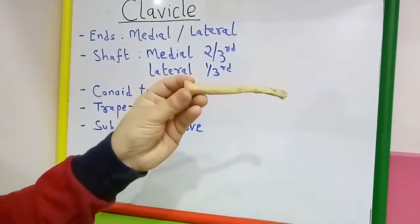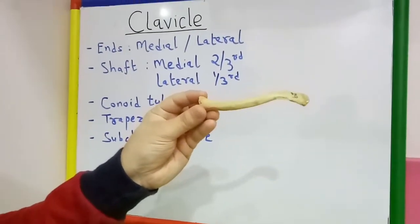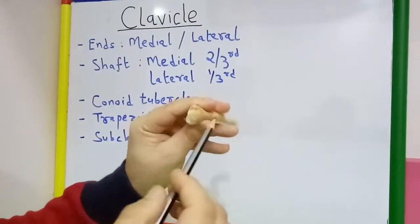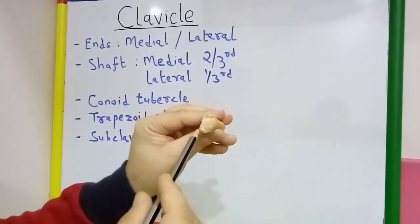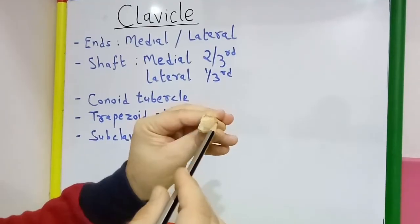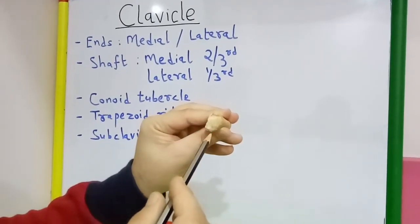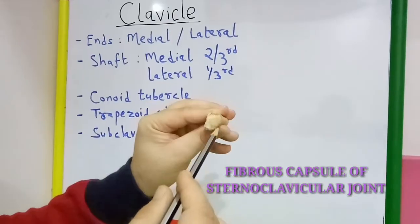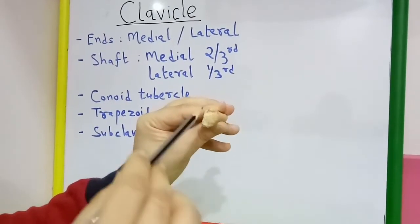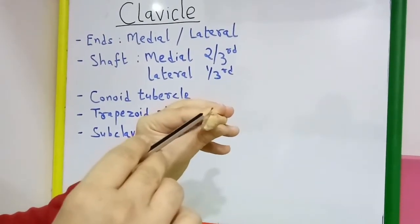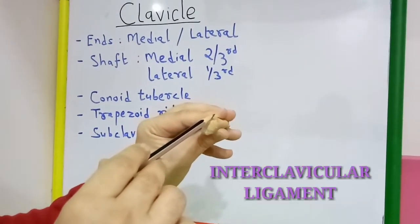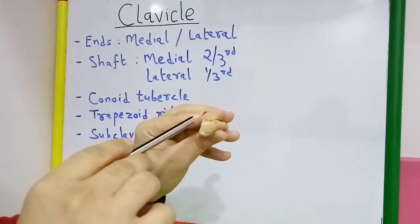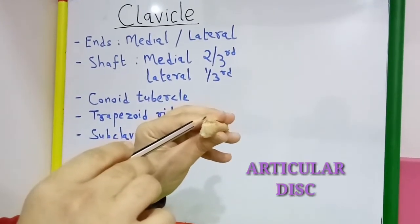Coming back to the left clavicle, the margin of the articular surface on the medial end gives attachment to the fibrous capsule of the sternoclavicular joint — superiorly to the interclavicular ligament and posterior-superiorly to the articular disc.